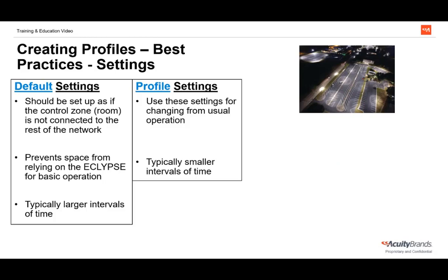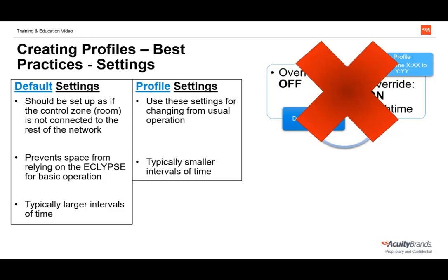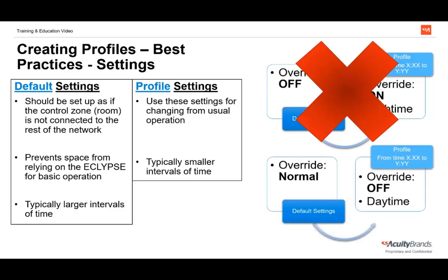Let's use our exterior lighting example. If we used a profile to run at night to override exterior lights on, we'd need the default setting to be override off for daytime — but we don't want to program this way. If the eclipse lost power and the profile doesn't run, the lights would remain overridden off, leaving people in the dark after sunset. Instead, leave the lights' default override setting at normal — which is on — and use a profile to override the lights off during the daytime. This way, if the profile doesn't run, users will never be left in the dark.